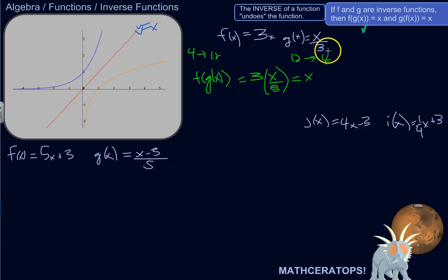Both conditions have to be true in order for the functions to be inverses of each other. So you have to test it both ways. So now let's do g of f of x. g of x is x over 3. So I'm going to do x over 3, but not just x. I'm going to do the entire function f of x over 3.